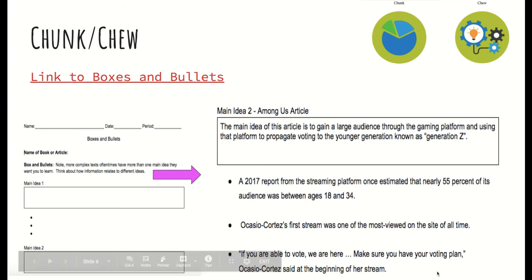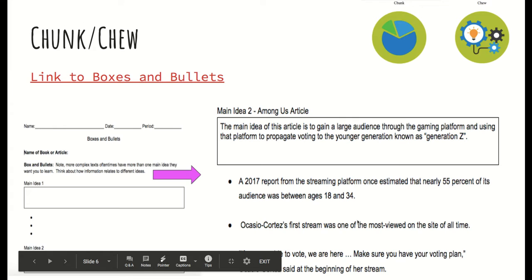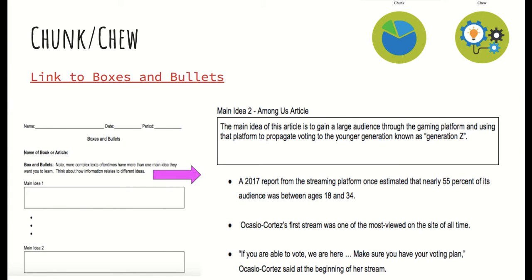So we're going to take a look at this. I know a lot of you struggled with it, but we can walk through this together. So here I did the article for myself so you all can see how I did it in comparison to yourself. So main idea number two, Among Us article. The main idea of this article is to gain a large audience through the gaming platform and using that platform to propagate voting to the younger generation known as Generation Z.